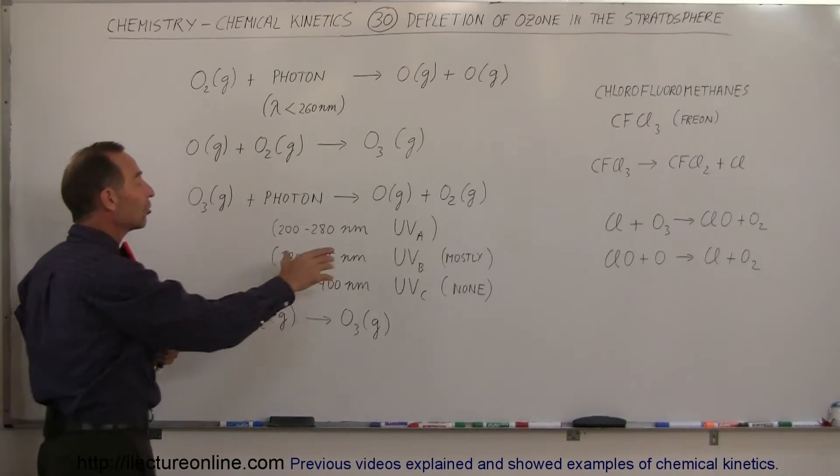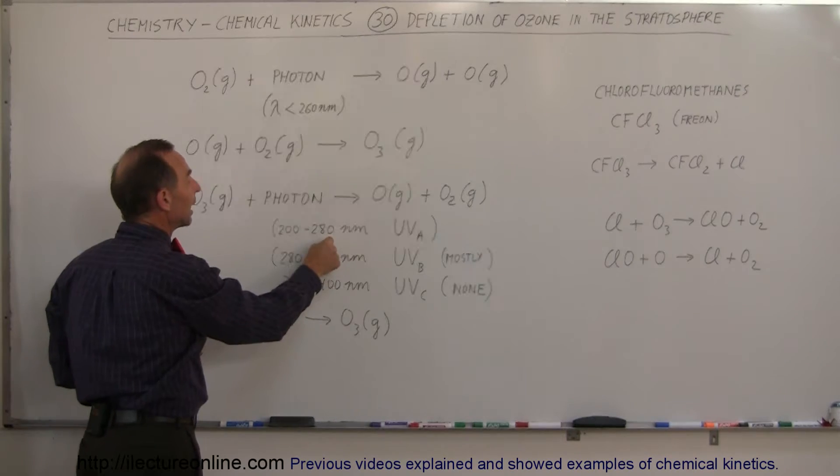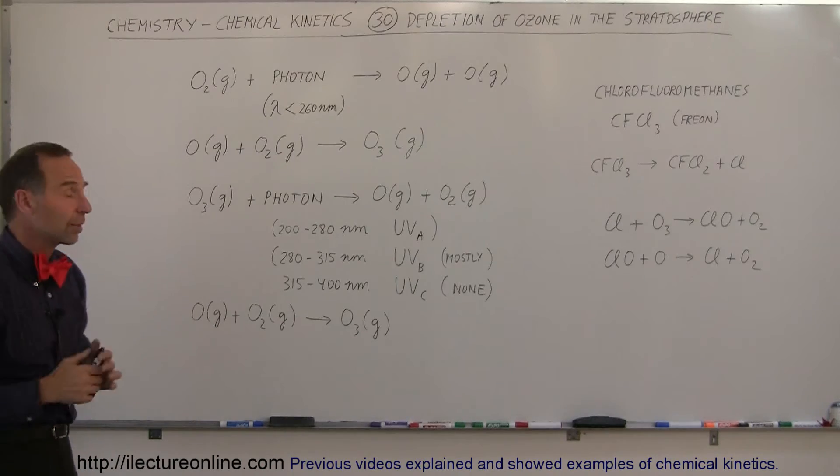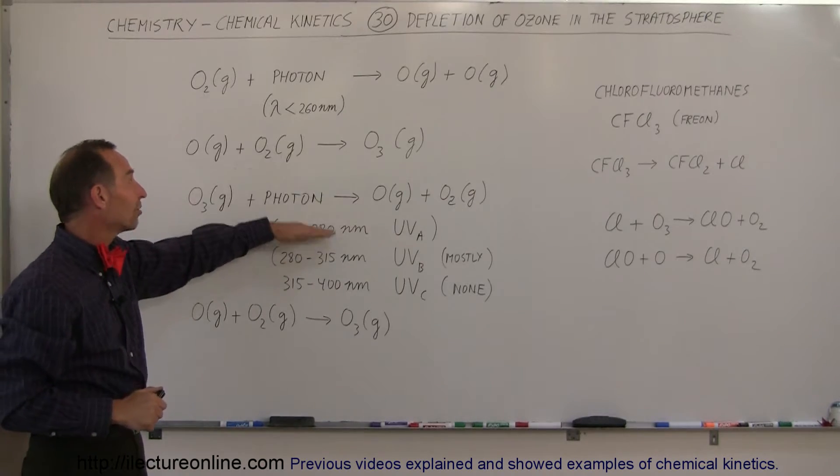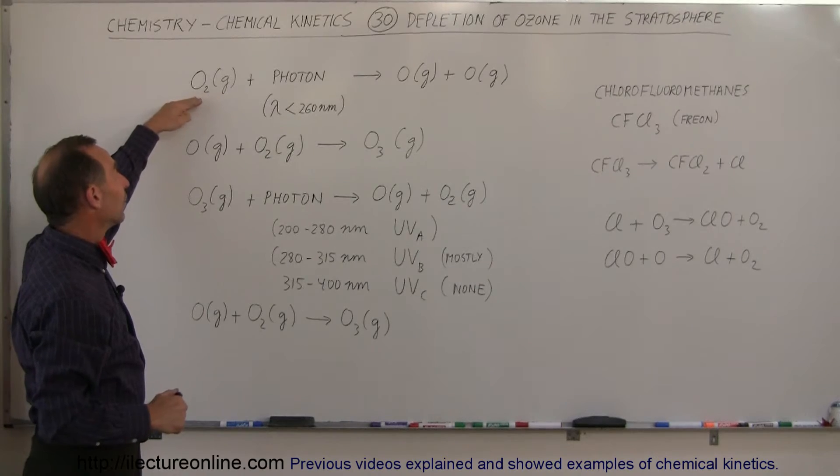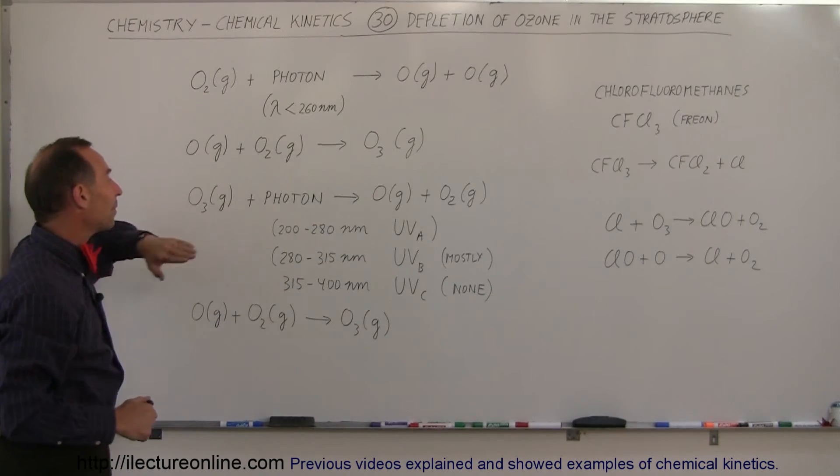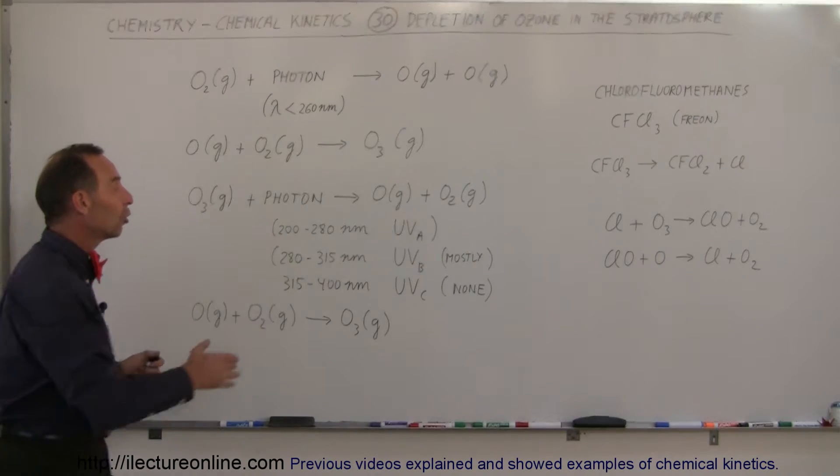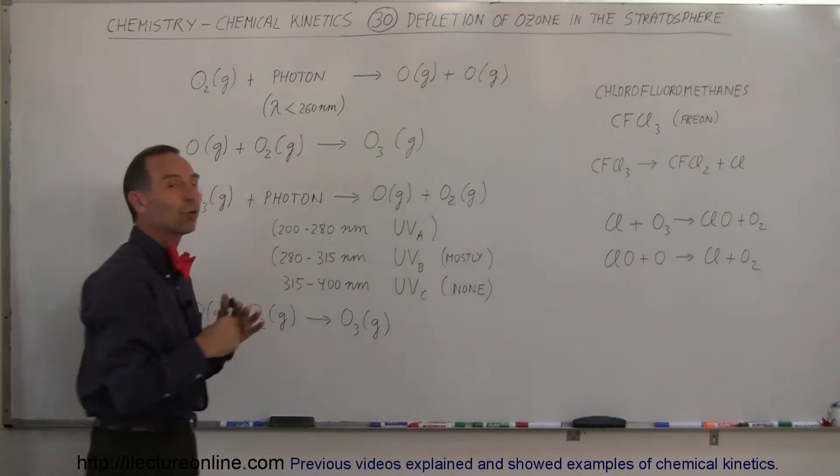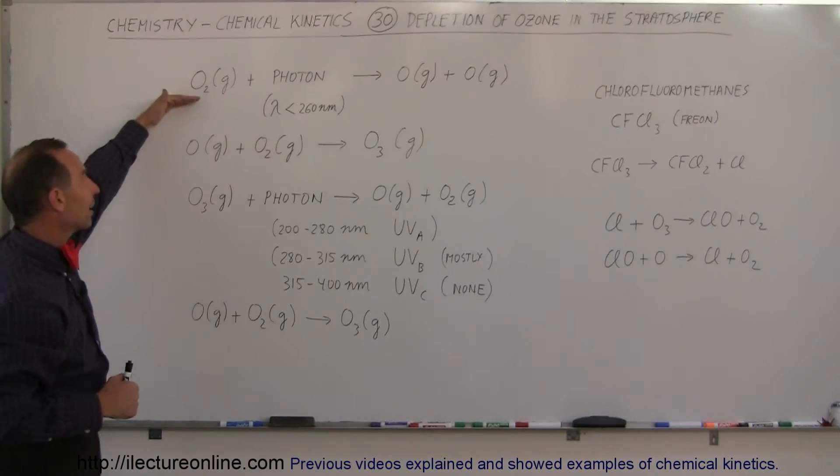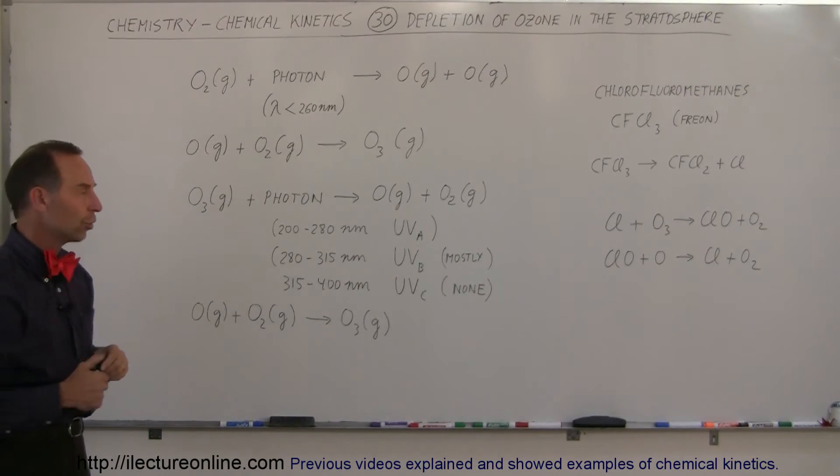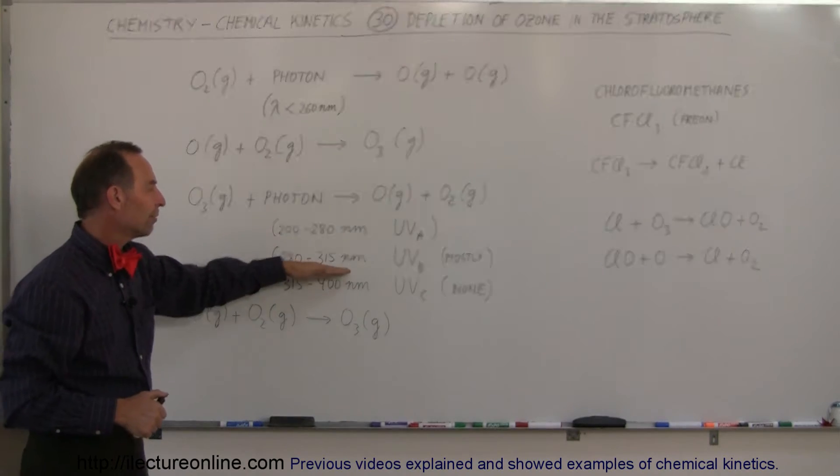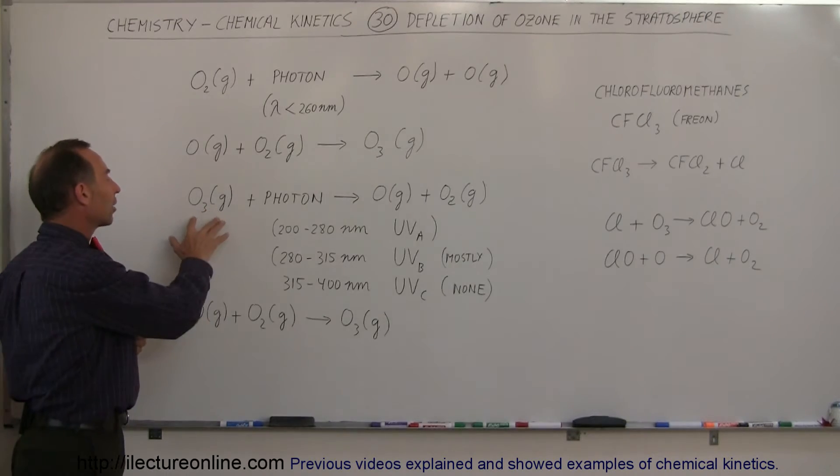Now UVA radiation has wavelengths between 200 and 280 nanometers. So most of those are already taken care of by the oxygen gas in the atmosphere, the diatomic oxygen gas, but the ones that have longer wavelengths which cannot be absorbed by the diatomic oxygen gas can get absorbed by the triatomic oxygen gas, the ozone gas. And so all of the UVA radiation is absorbed in the atmosphere either by the diatomic oxygen or the triatomic oxygen gas, the ozone.